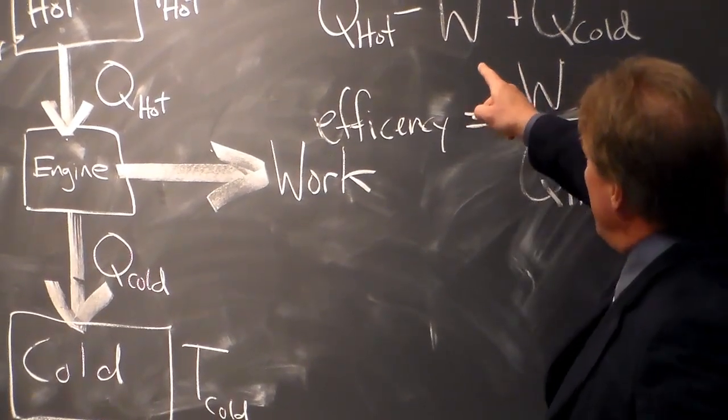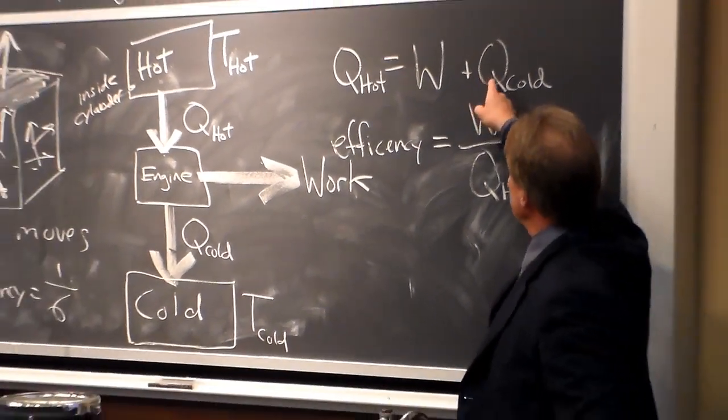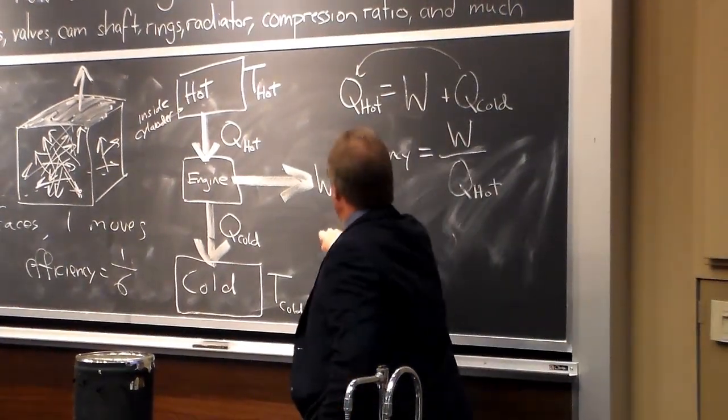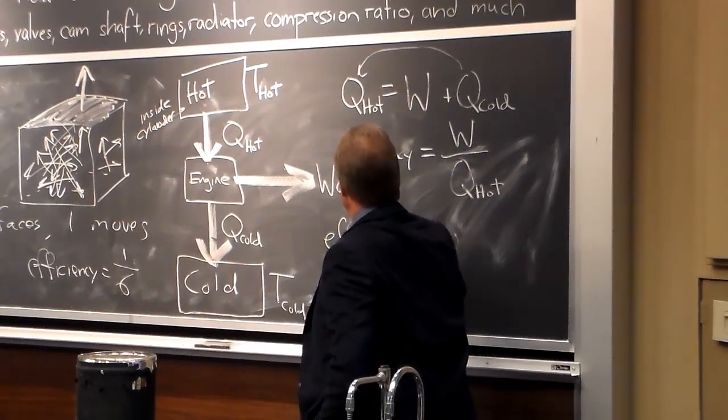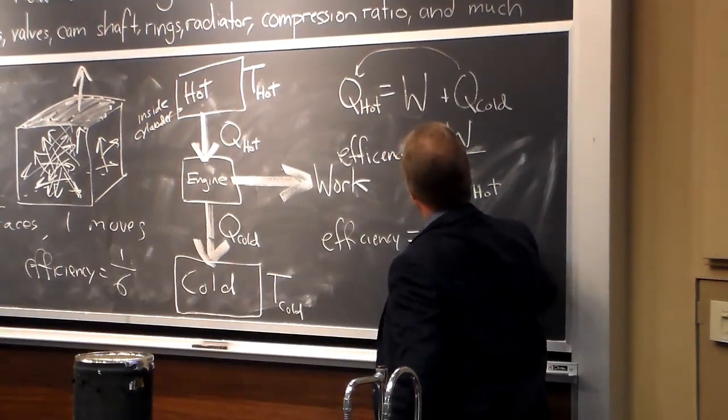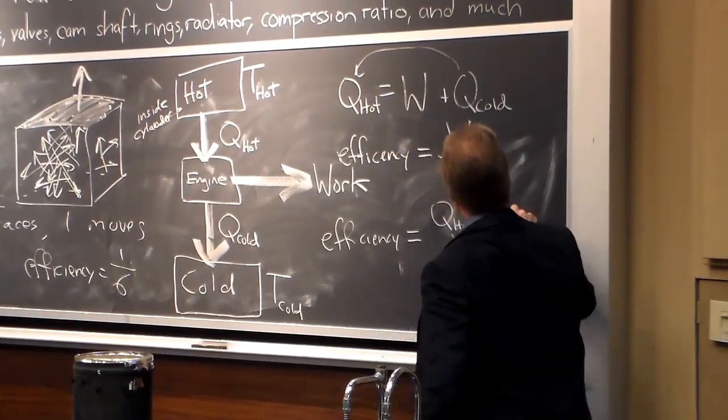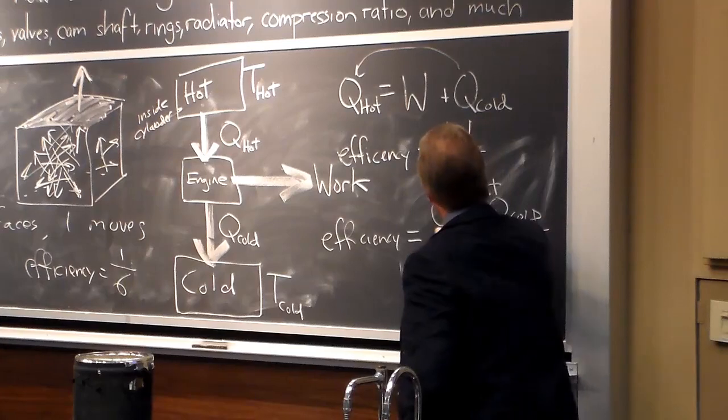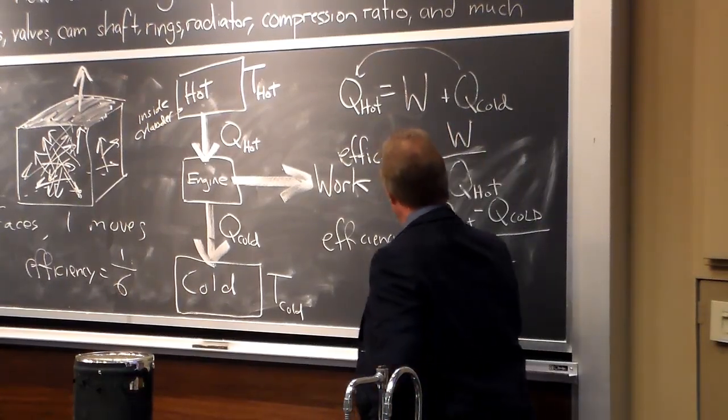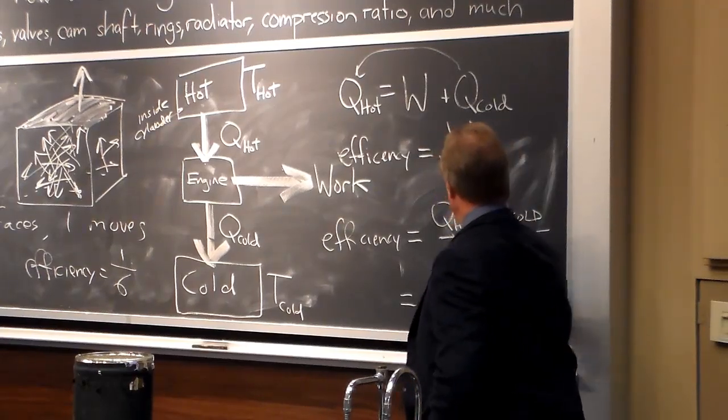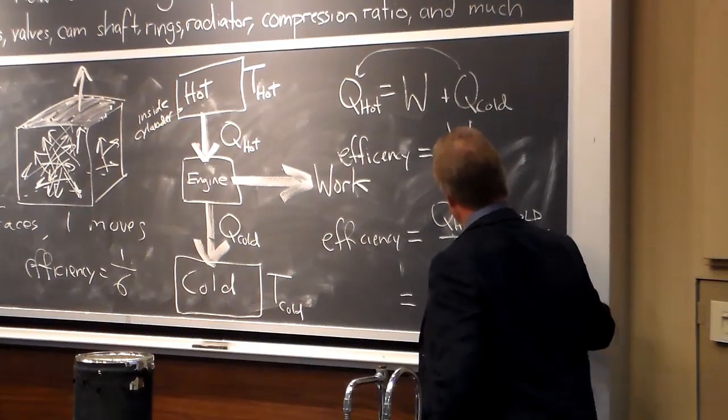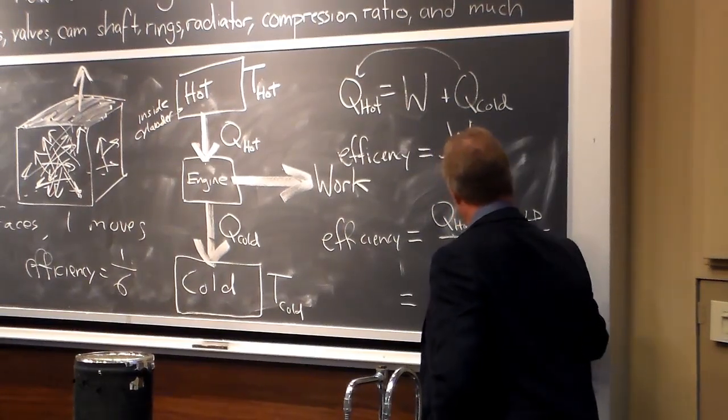Well, now we can do just a little bit of math. Let's take this. Let's take the Q-cold over on the other side of this equation. So I have efficiency is equal to Q-hot minus Q-cold over Q-hot. I can write that Q-hot over Q-hot. One minus Q-cold over Q-hot.